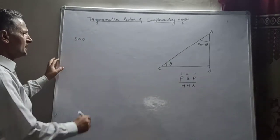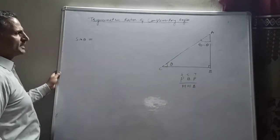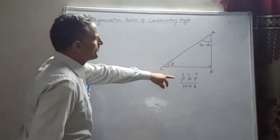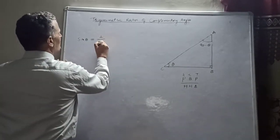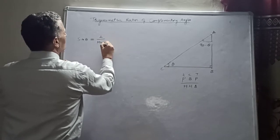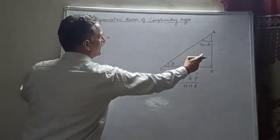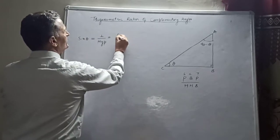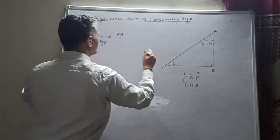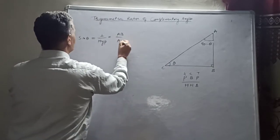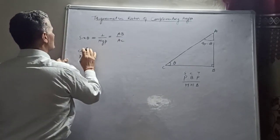Now, since theta is the base angle, sin theta equals perpendicular upon hypotenuse. The perpendicular here is AB and the hypotenuse is AC, so sin theta equals AB divided by AC.